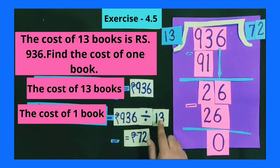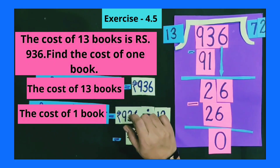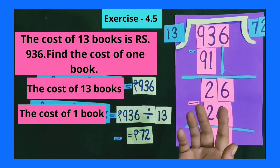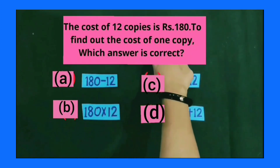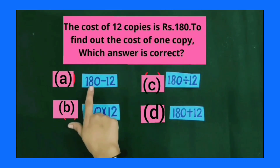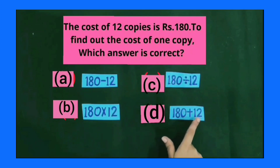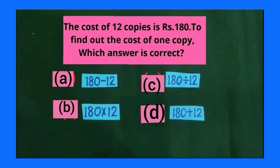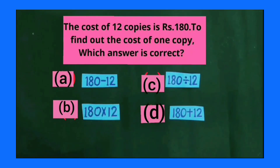We get the cost of one book by dividing rupees 936 by 13. When the cost of multiple things is given and we have to find the cost of one thing, we can find this cost by division. Now a multiple choice question: the cost of 12 copies is rupees 180 — find the cost of one copy. Four options are given: A) 180 minus 12, B) 180 multiply 12, C) 180 divided by 12, D) 180 plus 12. Since we need to find the cost of one thing from multiple, we use division, so option C is correct.